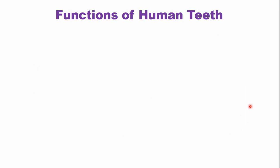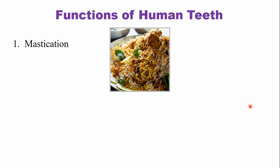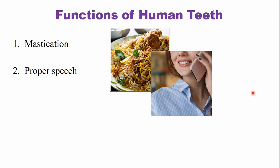What are the functions of human teeth? Human teeth have several functions like mastication. The process of digestion begins in the oral cavity — the teeth cut the food into smaller particles, and this process is known as mastication. The second important function is proper speech. Teeth are important for proper pronunciation of words. Teeth, together with the oral mucosa, they add beauty to the face.